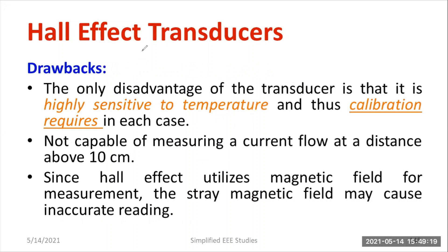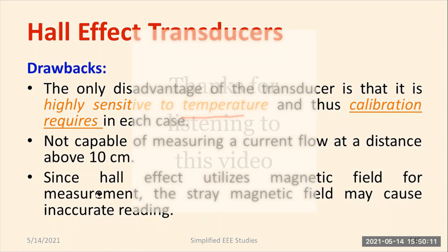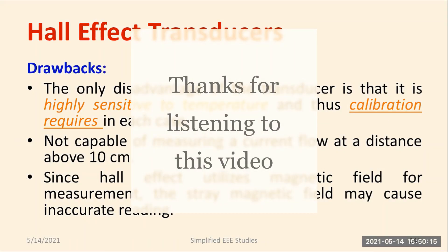The major drawbacks of the Hall effect transducer are: some Hall effect elements are sensitive to temperature; calibration is a somewhat tedious procedure; extending the range is difficult; it is not capable of measuring distances above 10 centimeters; and since it utilizes a magnetic field for measurement, stray magnetic fields may cause inaccurate readings. Any variation in the magnetic field due to stray fields will vary the Hall voltage, leading to errors, and accuracy is poor compared to other measurement types.